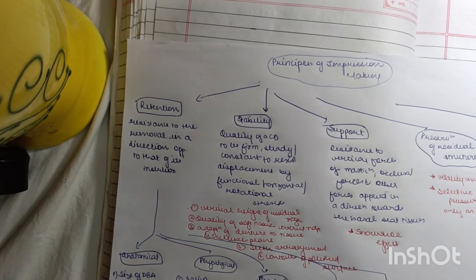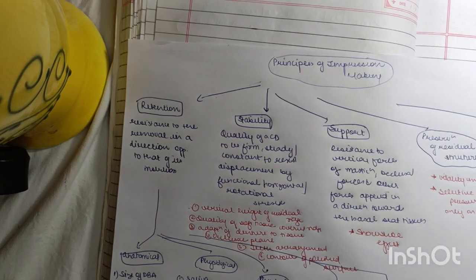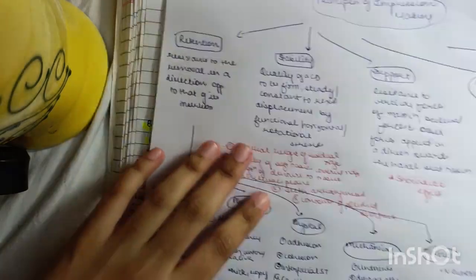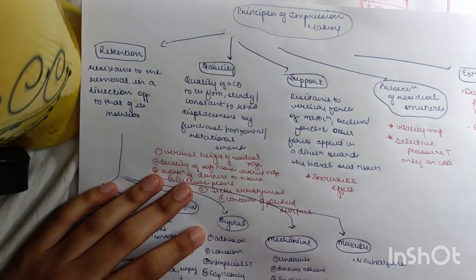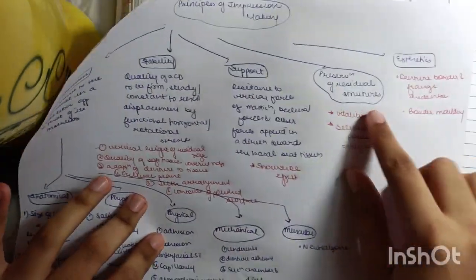In this video I'll be teaching you principles of impression making in a very easy way to learn and remember. There are basically five principles: retention, stability, support, preservation of the residual structures, and aesthetics.